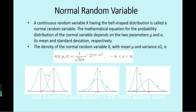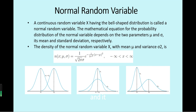The normal distribution is the most widely used continuous distribution in statistics, and it has two parameters, mu and sigma, in its density function.